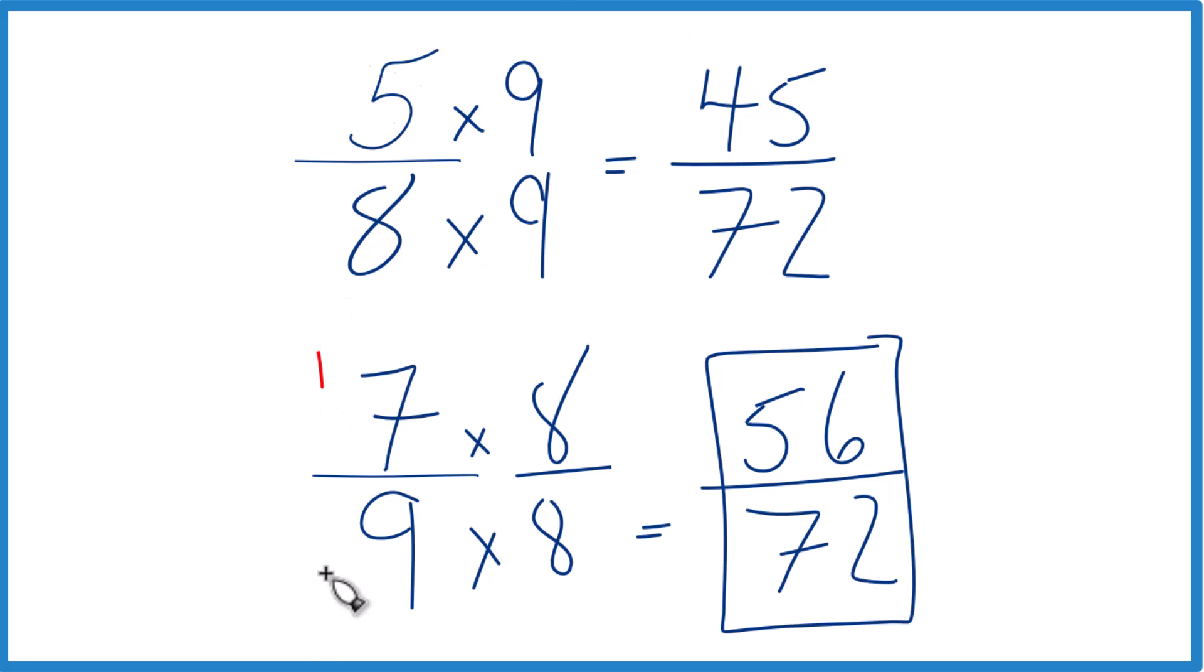So 7 ninths, that's greater than 5 eighths. This is Dr. B. Thanks for watchin'.